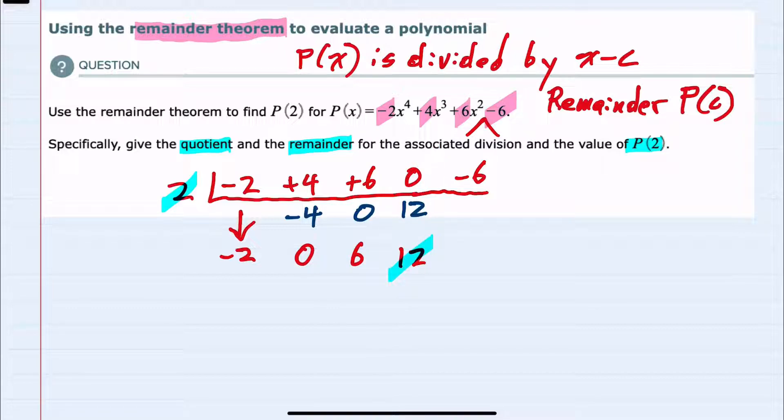Once again multiplying 2 times 12 is 24. And adding one last time, negative 6 and 24 would be 18.